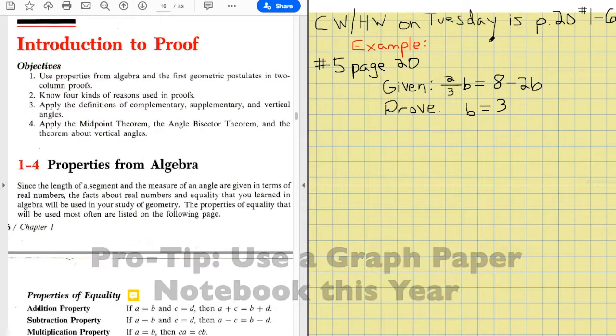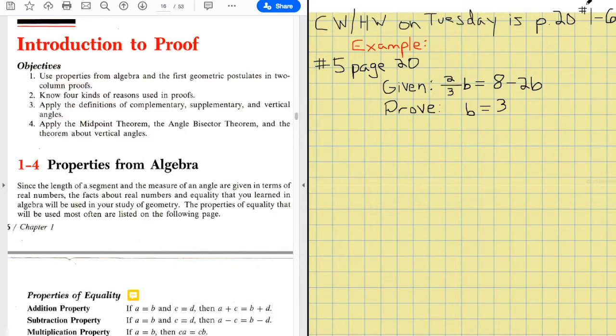Your homework on Tuesday is going to be classwork homework. It's going to be page 20, numbers one through six. Those are the written exercises. So the first six written exercises, all you're going to do on Tuesday. That's really all you're going to turn in. We're going to do number five together as well today. So got my textbook over here, I'm ready to go. I got my notebook over here, I'm ready to go. I got my grid paper to help keep myself organized.